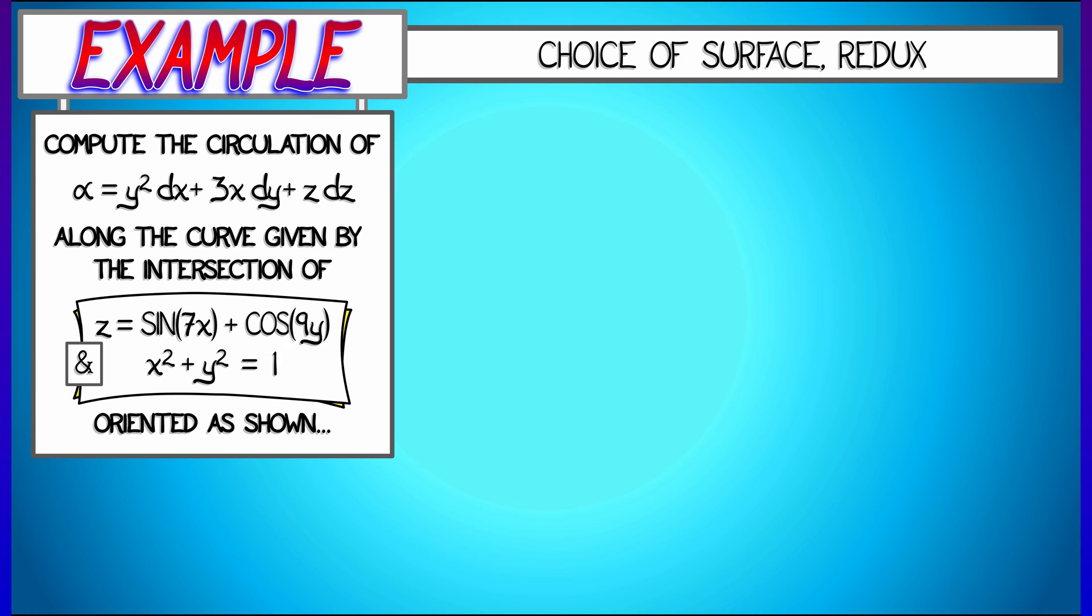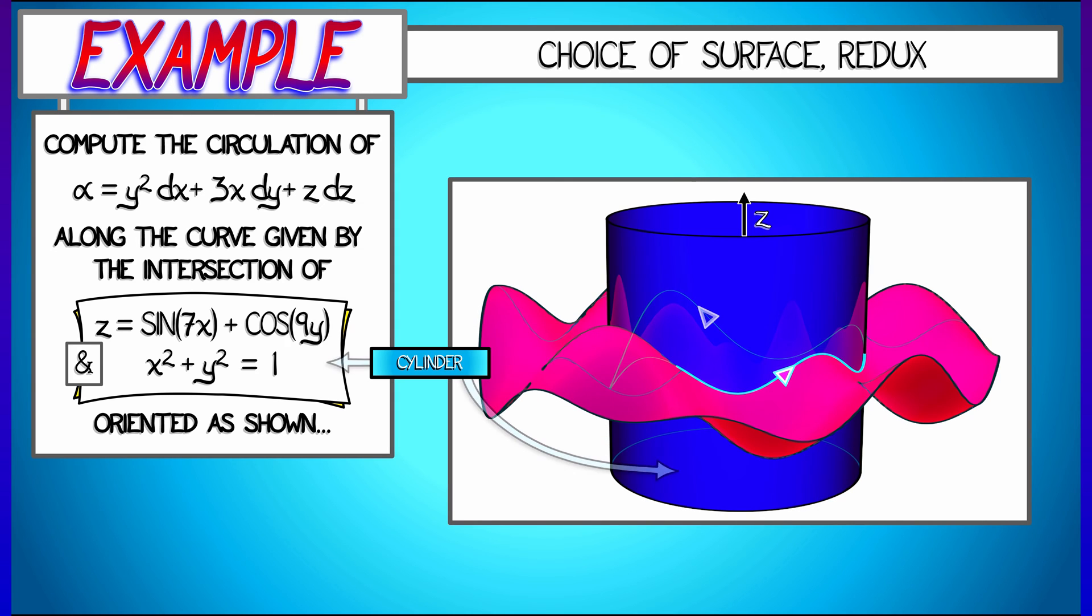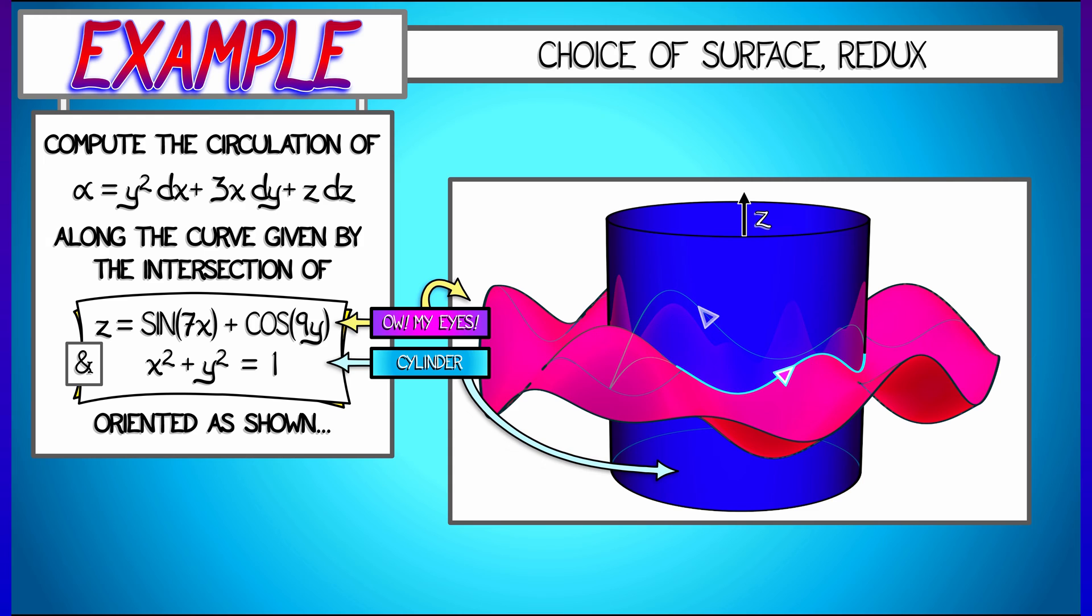That's really not so bad. But that first thing, that graph z equals sine of 7x plus cosine of 9y, that's all wavy and it looks kind of crazy. And I need to take the intersection of these two surfaces in order to get this curve. Now that curve is a loop, so this would seem to be a good Stokes theorem problem.